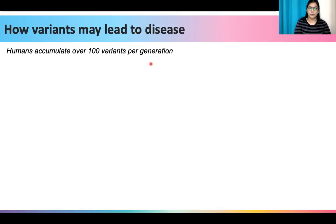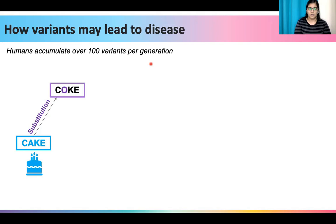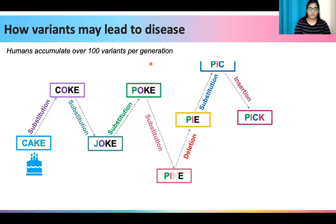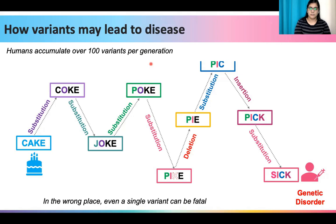Humans accumulate over a hundred mutations in their genome every generation. Considering we have a genome that is more than a billion bases long, this number may not seem like much. But as an analogy, let's consider the word 'cake', a simple and harmless thing. By changing a single letter, the word cake can transform into 'coke' — a harmless change yet the meaning is altered. The word coke can undergo a series of changes and ultimately get transformed into the word 'sick', a not so harmless thing anymore, which also forms the basis of genetic disorders — that in the wrong place even a single variant can be fatal.